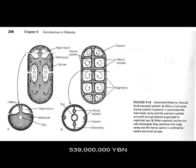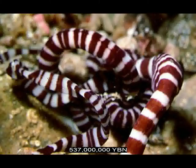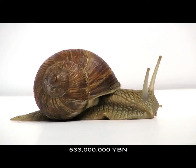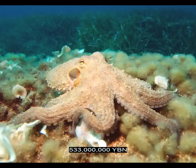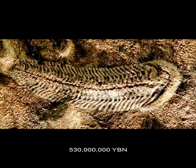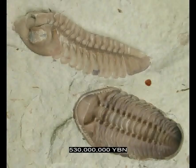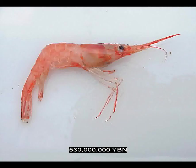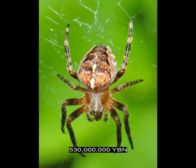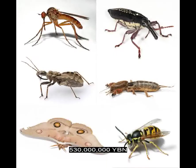Trochozoa Nemertia — ribbon worms. Trochozoa molluscs evolve. The phylum Mollusca is the second largest animal phylum after the arthropods and is divided into seven classes, three of which — Gastropoda (snails), Bivalvia (clams and mussels), and Cephalopoda (squids and octopuses) — are of major importance. Ecdysozoa arthropods evolve. Arthropods can be compared to a segmented worm encased in a rigid exoskeleton. The phylum Arthropoda is the largest phylum in the animal kingdom, and includes the trilobites, the crustaceans (shrimps, crabs, and lobsters), the myriapoda (centipedes and millipedes), the chelicerata (arachnids and horseshoe crabs), and the insects. All arthropods have a segmented body covered by an exoskeleton containing chitin, which serves as both armor and as a surface for muscle attachment.